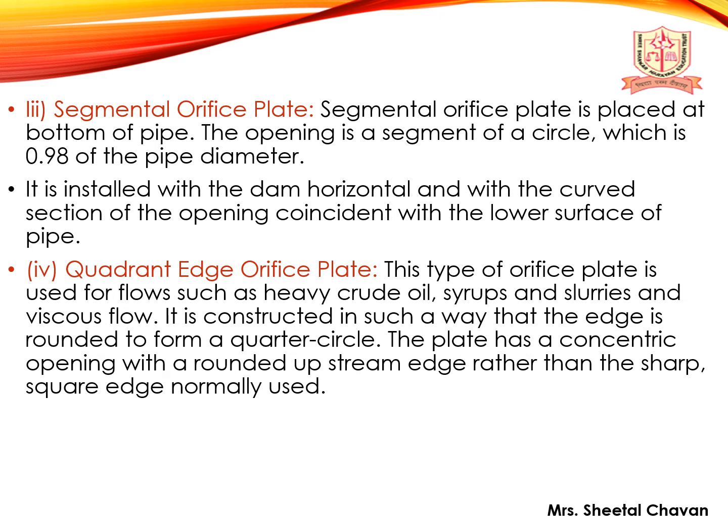The fourth is the quadrant edge orifice plate, used for flows such as heavy crude oil, syrups, slurries, and viscous fluids. It is constructed so that the edge is rounded to form a quarter circle. The plate has a concentric opening with a rounded upstream edge rather than the sharp square edge normally used.